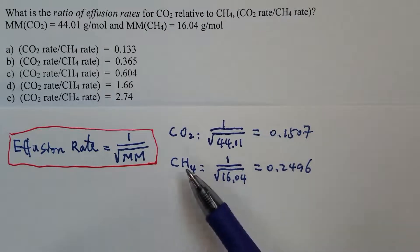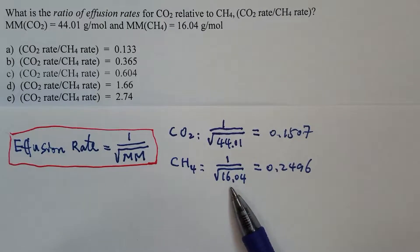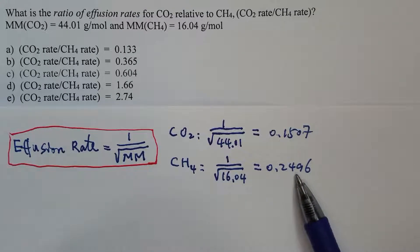We do the same for methane, 1 over square root of 16.04, so that gives us 0.2496.